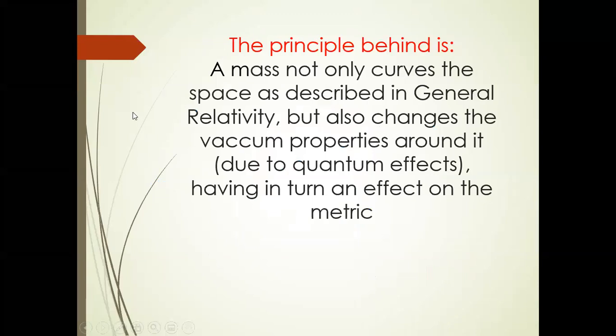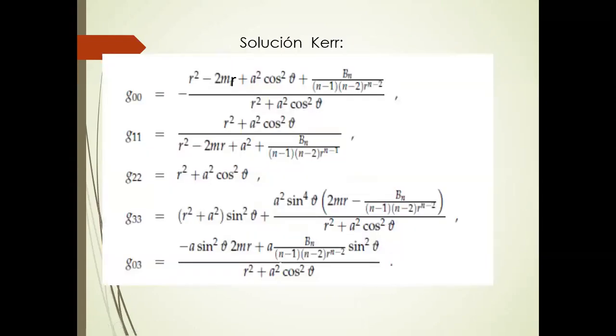The important point here is that there seems to be a principle behind that mass not only curves the space around it as described in general relativity, but there is a quantum effect related to it. It changes the quantum properties around a black hole, about a large mass, and it accumulates vacuum or something like that, and which has an effect on the matrix. And we choose a parameter B such that there is no event horizon from a philosophical point of view. Okay, here we get this Kerr solution of this model, which has a standard form, except you have these contributions with this parameter BN in it, which changes the properties.